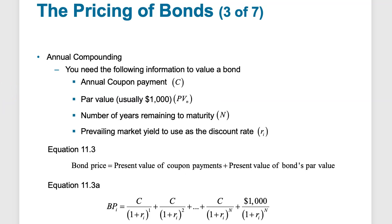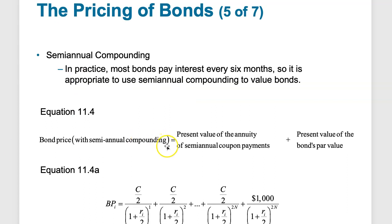Bonds generally compound semi-annually, but we can do annual compounding. We need to know the par value of the bond, the number of years remaining, and the prevailing market yield as the discount rate to plug in and get the bond price. For semi-annual compounding, we divide the annual coupon by two and divide the annual rate by two to calculate the bond price. There's a separate video where I'll use spreadsheets to show how to calculate this.